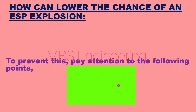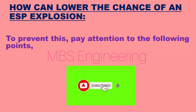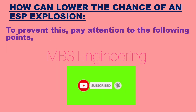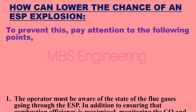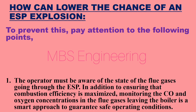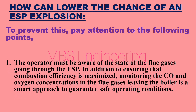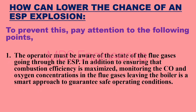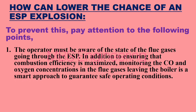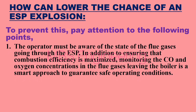Next, we will look at how to lower the chance of an ESP explosion. To prevent explosions, pay attention to the following points. Point 1: The operator must be aware of the state of the flue gases going through the ESP. In addition to ensuring combustion efficiency is maximized, monitoring the CO and oxygen concentrations in the flue gases leaving the boiler is a smart approach to guarantee safe operating conditions.